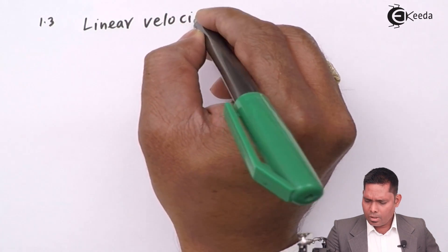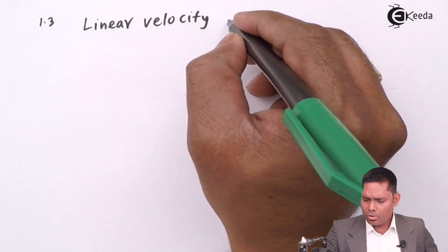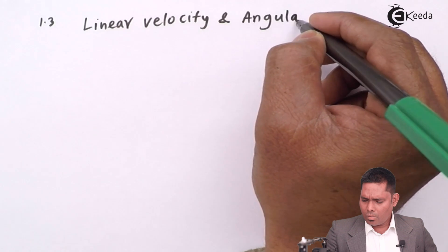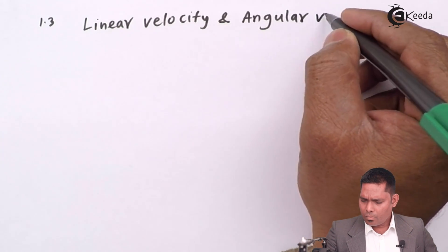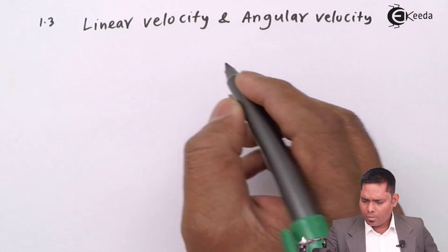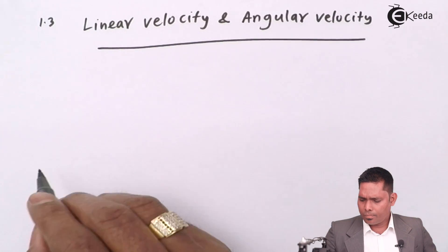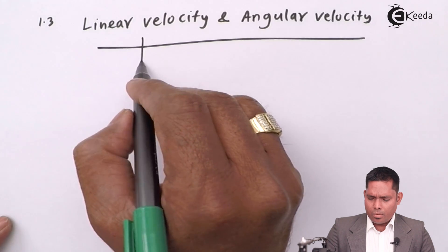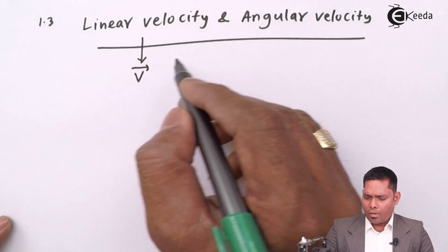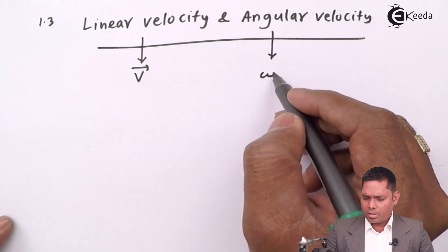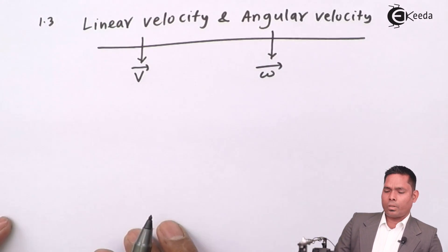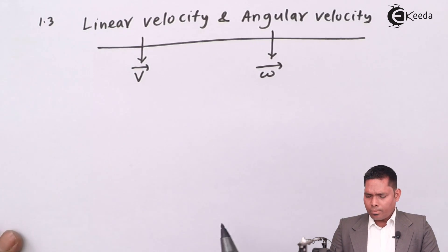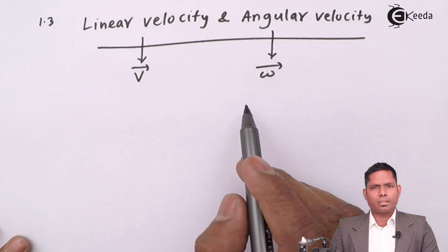We have linear velocity and angular velocity. V stands for linear velocity and omega stands for angular velocity. First of all we will derive this in scalar form, then we will discuss about its vector form.